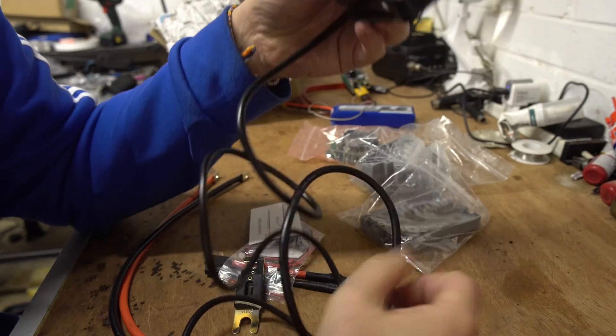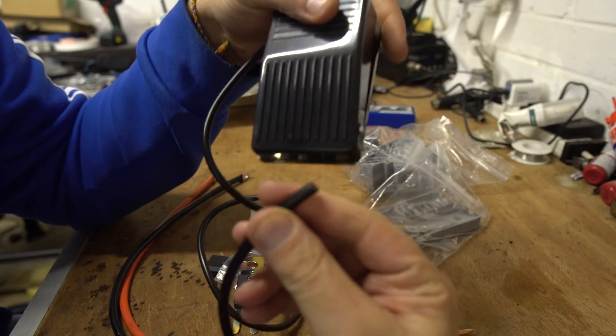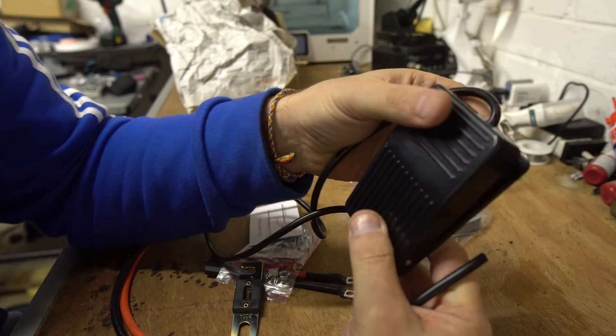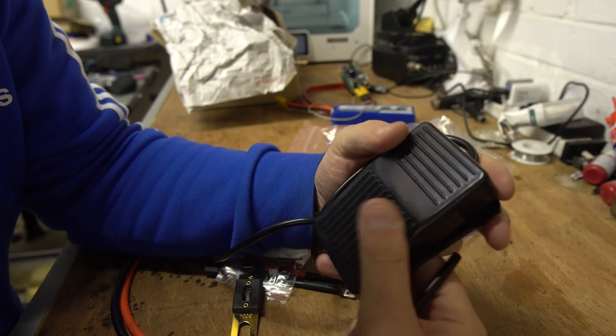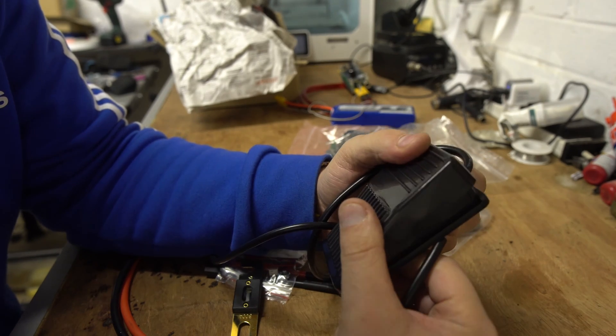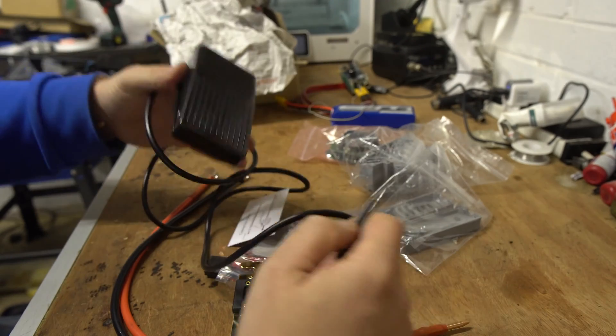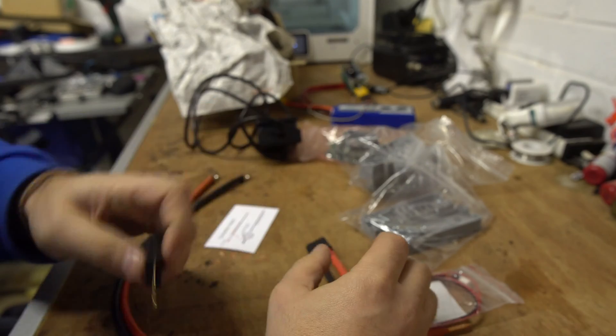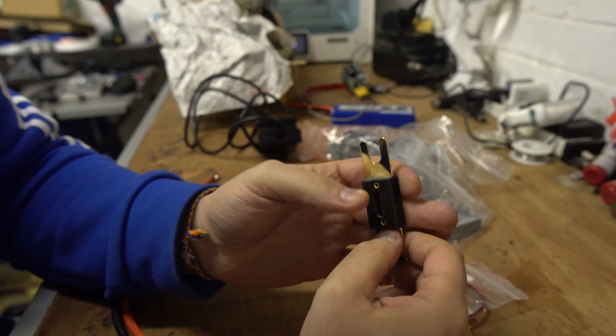And this one actually also comes with a foot switch. I'm not entirely sure if I like the idea of the foot switch, certainly got a long enough cable. Might end up modding something so that we use another type of switch but it comes with a foot switch if you're into that, that's pretty cool. That looks like the input cable and the fuse which we've been through. So I'm going to get the instructions up, we'll have a look at building this together.